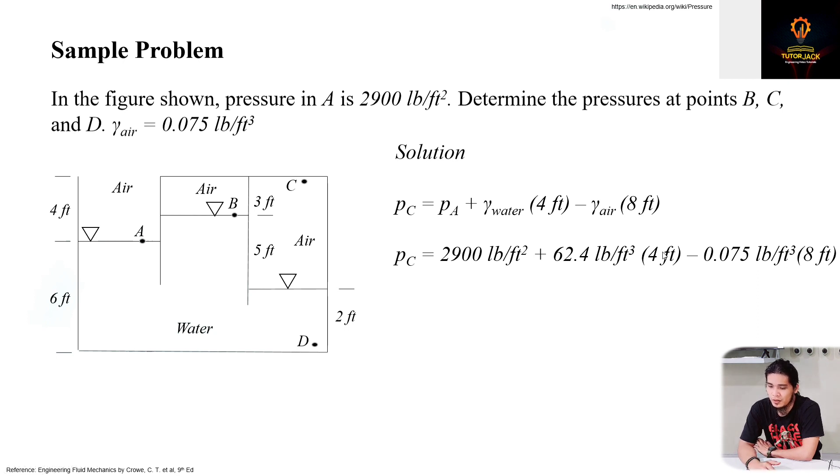And then we have the 0.075 given unit weight of air times change in elevation from this point to this point. Then you'll have the PC as 3,149 pounds per square foot.